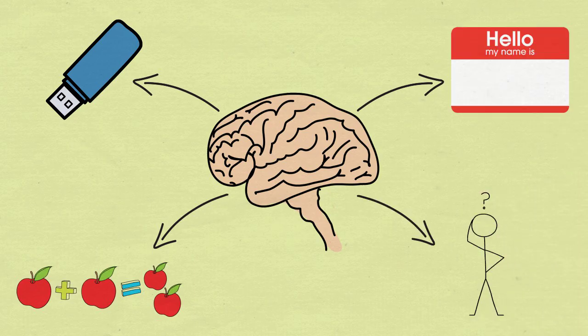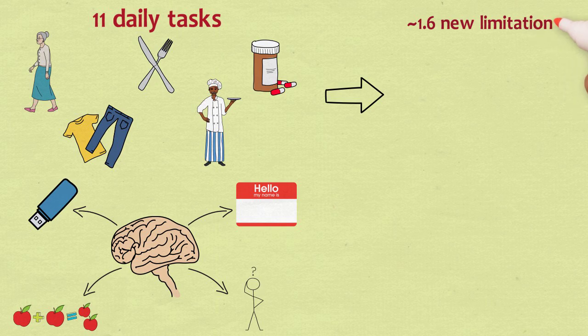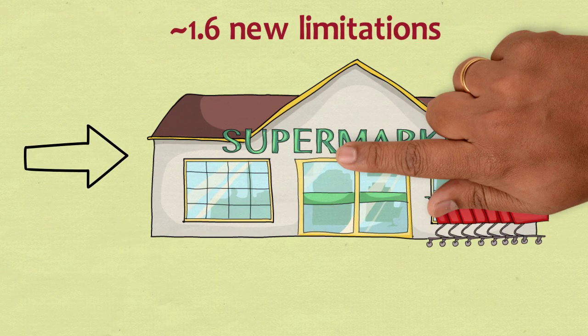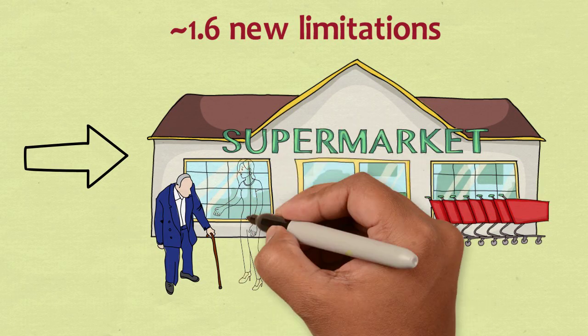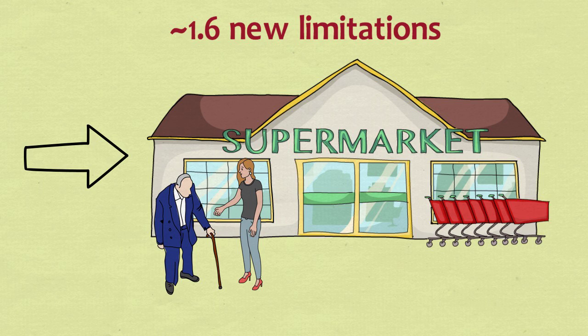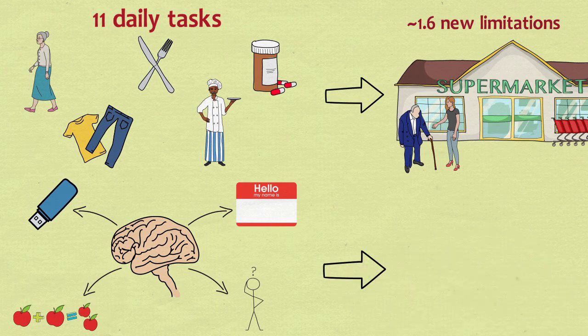Sepsis patients with no functional limitation before the infection gained an average of nearly 1.6 new limitations in their daily lives. For example, 40% of sepsis patients later had trouble walking, while 20% needed assistance with going to the grocery store or preparing a meal.